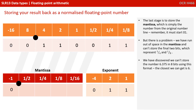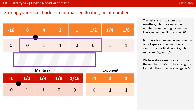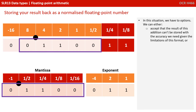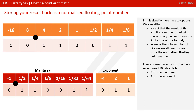The last stage is to store the mantissa, which is simply the number from the original number line, remembering it must start 0, 1. But we've got a problem — we've run out of space in the mantissa and can't store the final two bits, the bits representing a quarter and an eighth. We've discovered we can't actually store the result of 6.375 in eight bits using this format; the closest we can get is 6. In this situation we have two options: accept that the result can't be stored with the precision we need given the limitation of this format, or increase the total number of bits used. If we choose the second option, we would need a minimum of 10 bits total — 7 for the mantissa and 3 for the exponent.